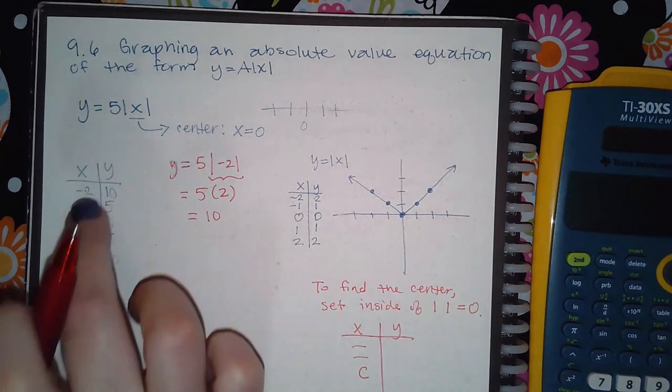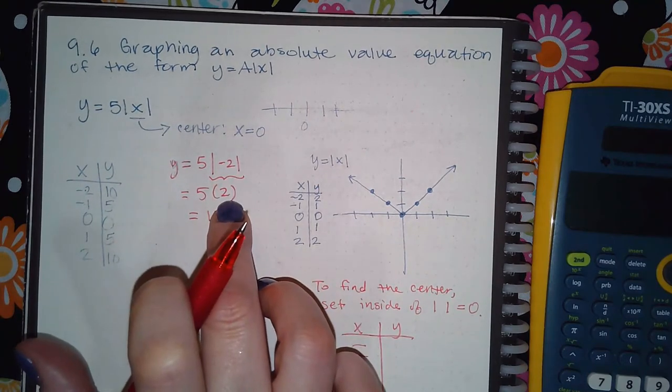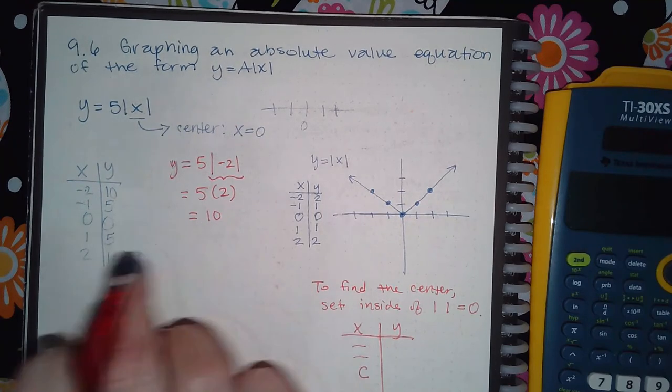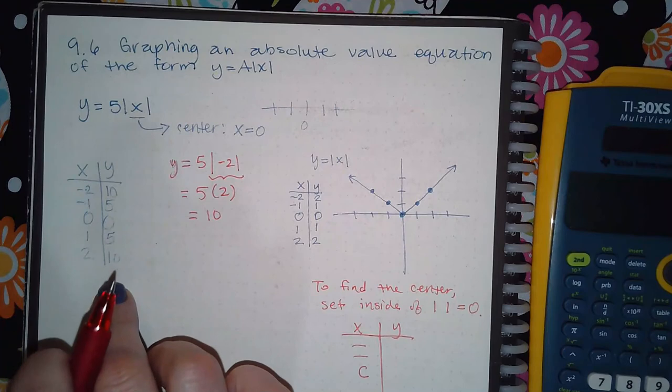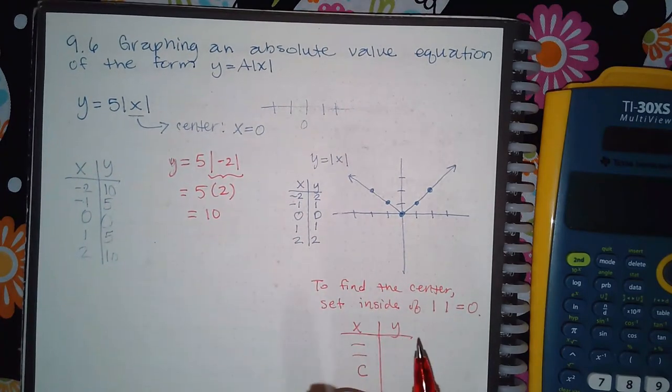And I'm doing that for every single one of these x values, plugging them in, simplifying the absolute value first, and then multiplying the result times five to get that final answer. So I talked it out, but in case you're visual, I went ahead and wrote down at least one of them so you can see what I was saying.